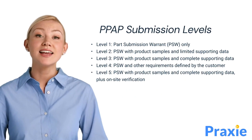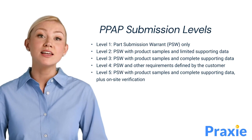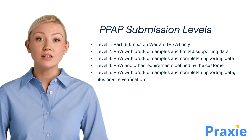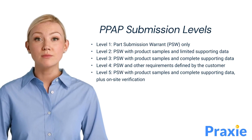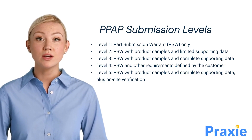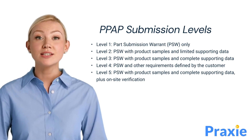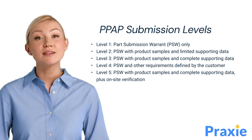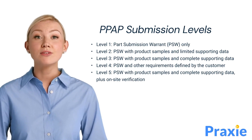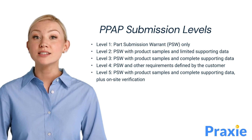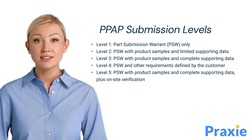PPAP has different submission levels ranging from Level 1 to Level 5. Level 1 is the Part Submission Warrant (PSW) only. Level 2 is PSW with product samples and limited supporting data. Level 3 is PSW with product samples and complete supporting data.